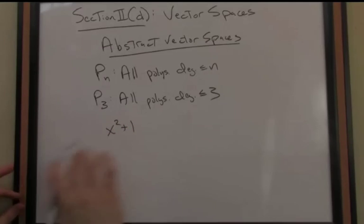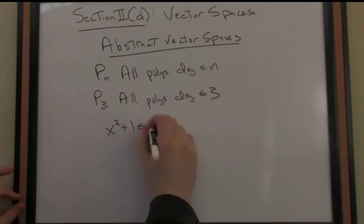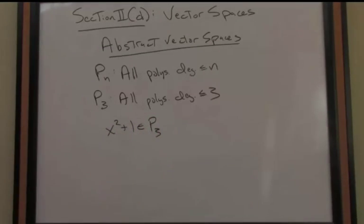So if I look at the polynomial, this is a quadratic, right, because x squared. x squared plus 1, that's an element, sure enough, of this vector space P3. It fits the bill. It's a polynomial of degree less than or equal to 3.